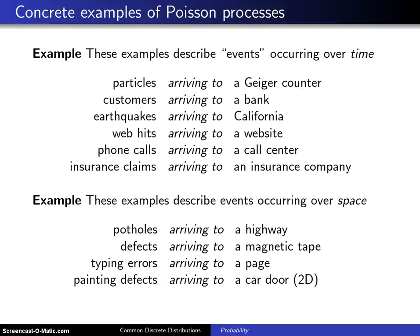When the Poisson process was first defined, it was defined as a model for events that occur over time or space in a random fashion. The purpose of this slide is to give a few examples of events occurring over time and events occurring over space.